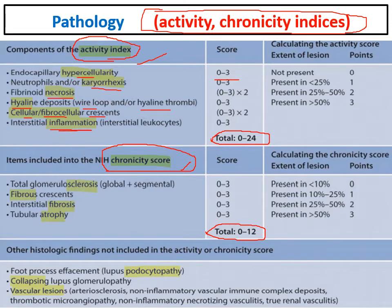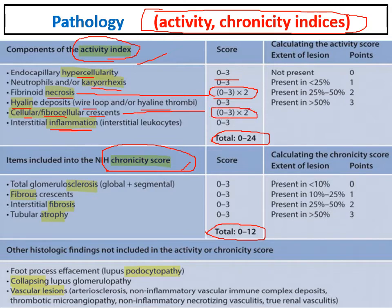Two activity items are multiplied by two due to their importance: fibrinoid necrosis and crescent presence. Scoring: absent = 0; present in less than 25 percent = 1; between 25–50 percent = 2; more than 50 percent = 3. The scores are summed to give the final activity index.